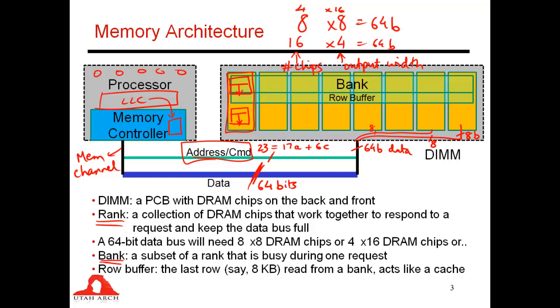So the banks essentially provide memory level parallelism. So while one bank is busy, because that bank is going to be busy for many nanoseconds, you want to be able to issue requests to other banks at the same time. And note that it's not just this one DRAM chip that is going to read data out into its row buffer. Since all of these DRAM chips in a rank work in unison, at the same time you will have this DRAM chip also reading out the same row into its row buffer, and so on. So this entire row of data spread across many DRAM chips is all being read into its row buffer.